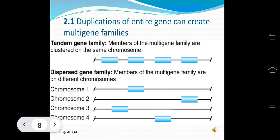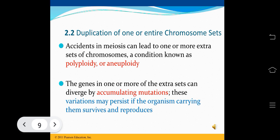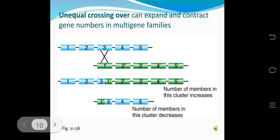Duplication of an entire genome can create multi-gene families. Members of a tandem gene family are clustered on the same chromosome, while members of a dispersed gene family are on different chromosomes. Duplication of one or entire chromosome sets through accidents in meiosis can lead to extra chromosome sets — a condition called polyploidy or aneuploidy. The duplicate genomes can diverge by accumulating mutations. Unequal crossing over can expand or contract gene numbers in multi-gene families.